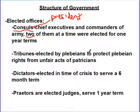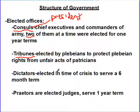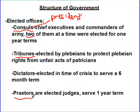Tribunes are elected by plebeians to protect plebeian rights from the unfair acts of the patricians. As the consuls and Senate got powerful, the plebeians said they needed representation too — so tribunes are kind of like the consuls of the plebs. Occasionally, dictators would be elected in times of crisis to serve a six-month term — we saw the same thing in ancient Greece. If you have huge problems in society, you need just the voice of one trusted person to get out of the crisis. Praetors would be elected judges.